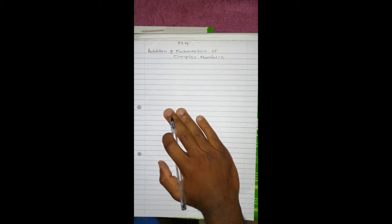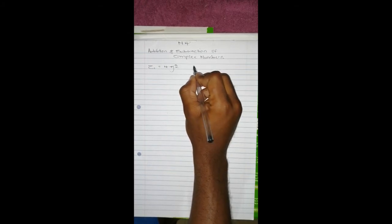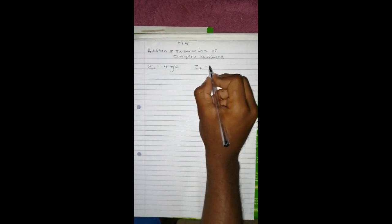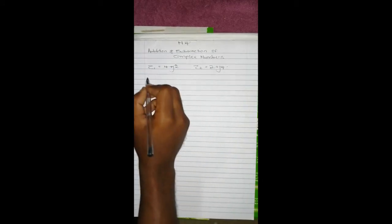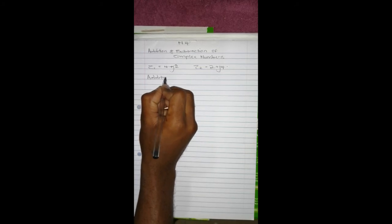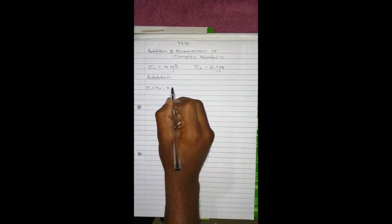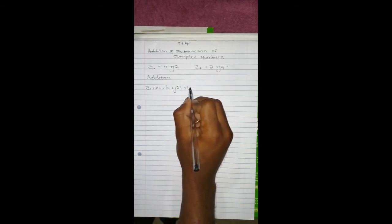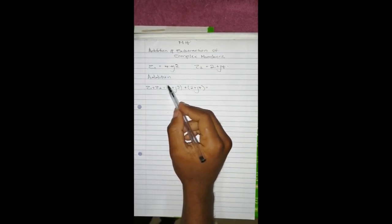To do the addition and subtraction, let's say for instance you are given two complex numbers: z1 which is 4 plus 2j and z2 which is 2 plus 4j. Then let's do the addition first. To add z1 plus z2, you write down everything: 4 plus 2j, plus 2 plus 4j.